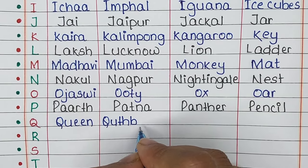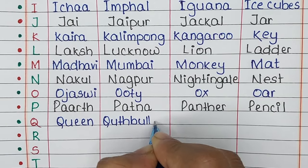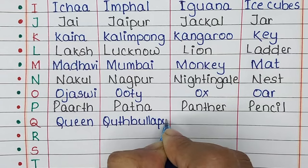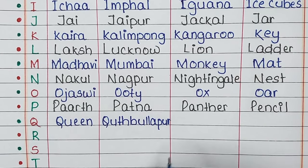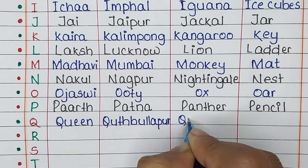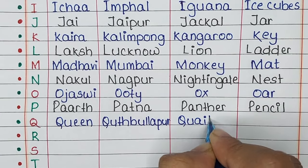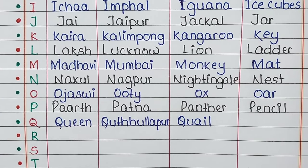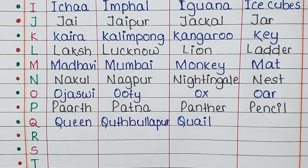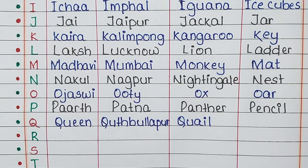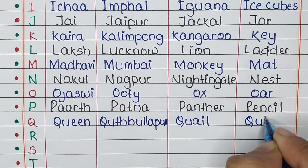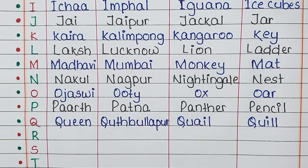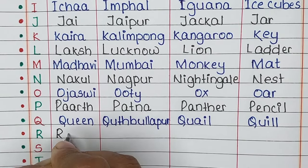Next is letter Q. The name is Queen, the place is Qutubullapur, the animal is Quail, and the thing is Quill.